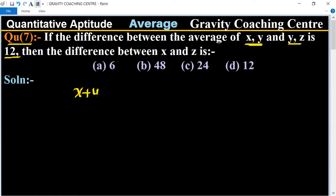So number of observations is here two. And the average of y plus z, y comma z, is y plus z upon 2.